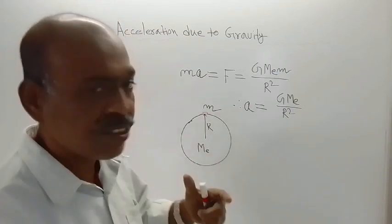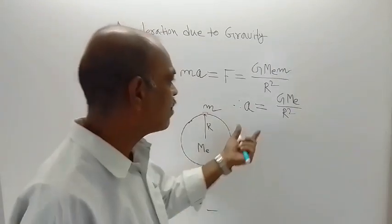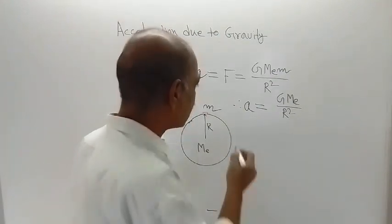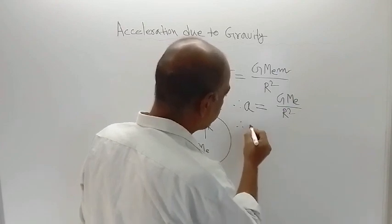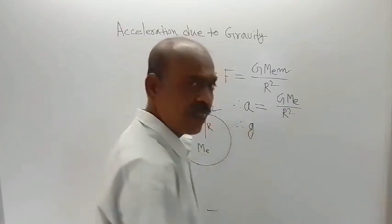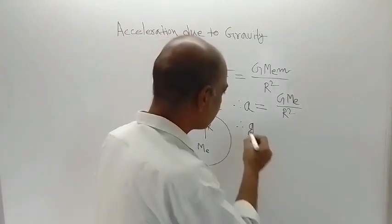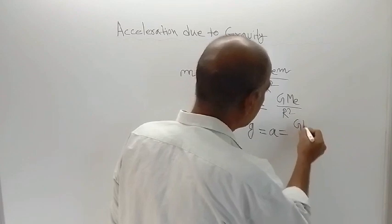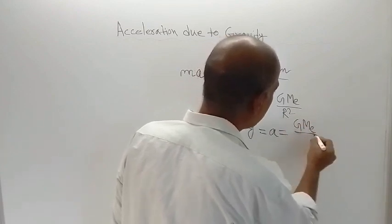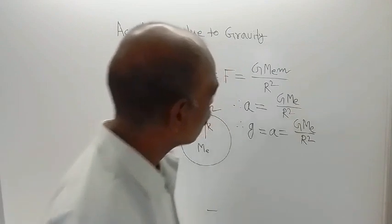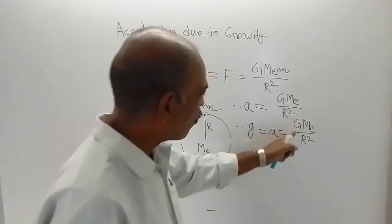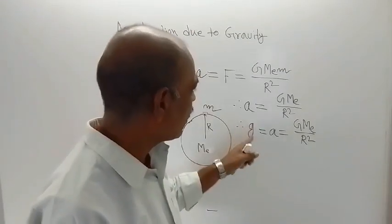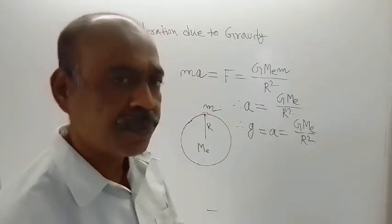That is why it is called acceleration due to gravity. Instead of writing a, small g is used for acceleration due to gravity. Therefore, this a is replaced by g. So g = a = G·Mₑ / r². We know the values of G, r, and Mₑ, so acceleration due to gravity can be obtained this way.